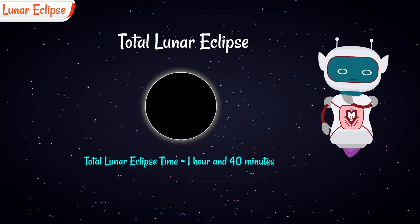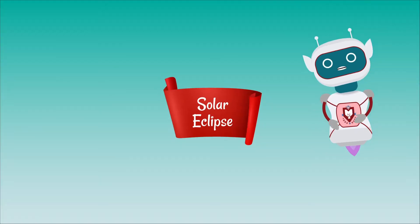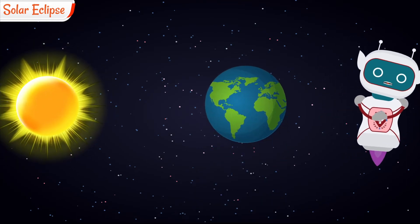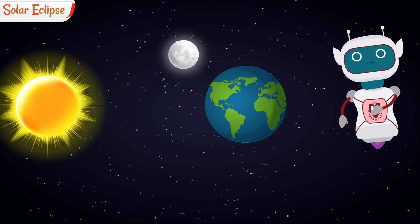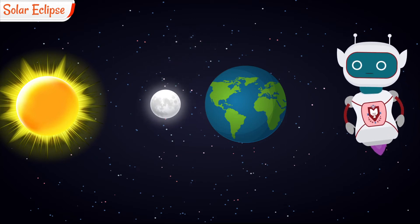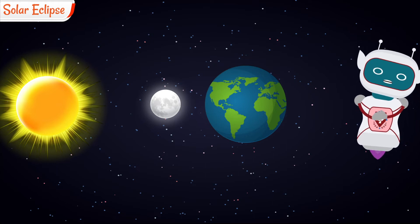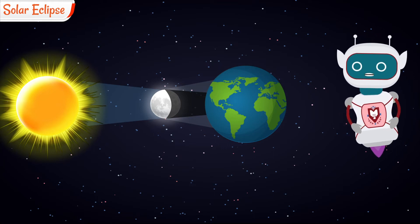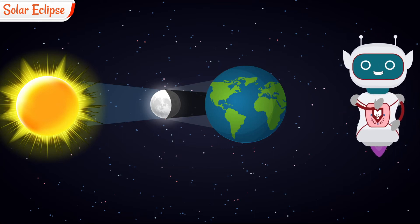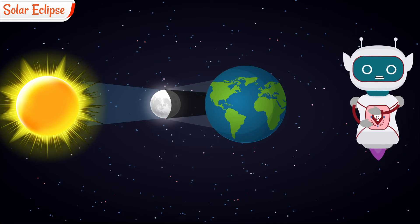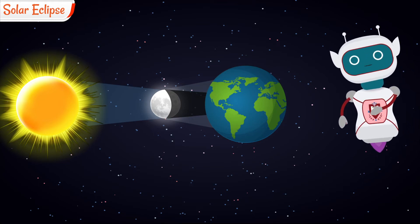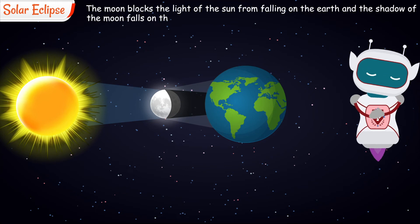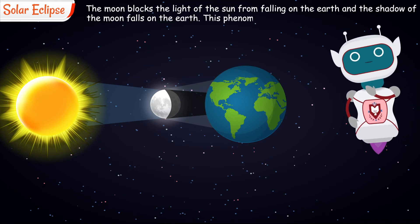Now, what is a Solar Eclipse? In a solar eclipse, the Sun, Moon, and Earth are in a straight path, but here the Moon is in the middle, between the Sun and the Earth. The Moon blocks the light of the Sun from falling on the Earth, and the shadow of the Moon falls on the Earth. This phenomenon is called a Solar Eclipse.